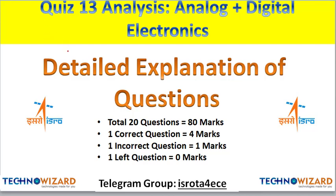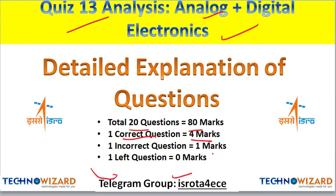Hey guys, welcome to TechnoZar. This is Rohisha Amman and in this video we are going to analyze quiz 13, which is based upon analog plus digital electronics. I have taken some conceptual questions in this quiz — no numericals. Total 20 questions are there in the quiz and the marks were 18 marks. One correct question is equal to four marks and one incorrect is one mark. Those who want to attend quizzes, please join our telegram group — Rota for EC — at daily at 7 p.m.